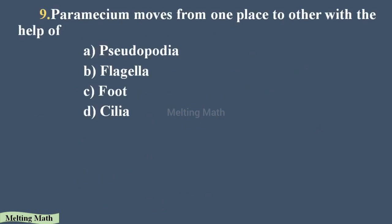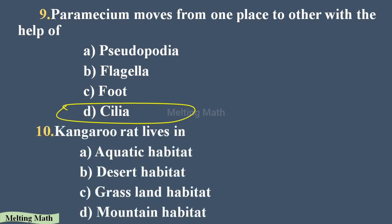Question nine: Paramecium moves from one place to another with the help of cilia. Option D is the correct answer. Question ten: where does the kangaroo rat live? Option B, desert habitat, is the correct answer. The kangaroo rat lives in the desert and has a special feature — it does not drink water; it gets water from the oxygen produced through breathing itself.